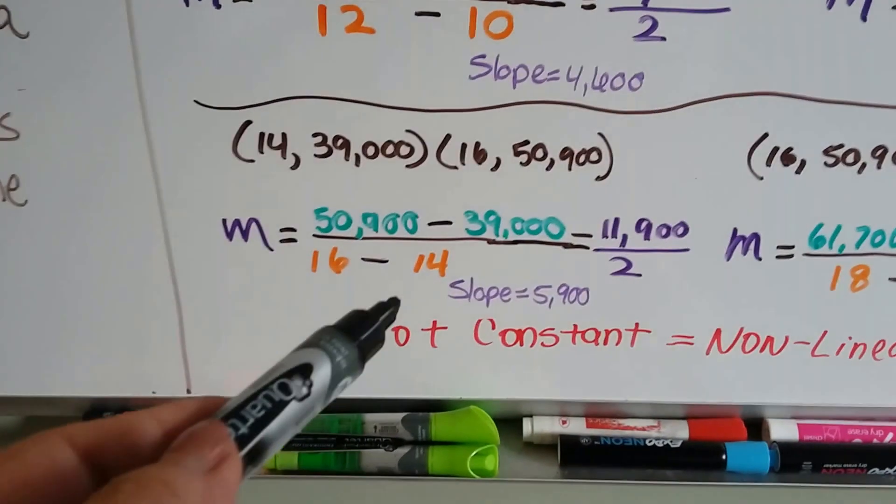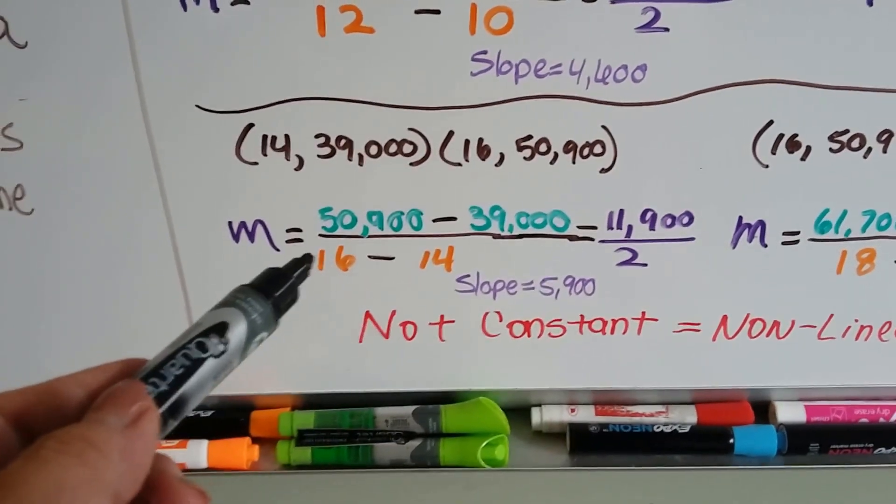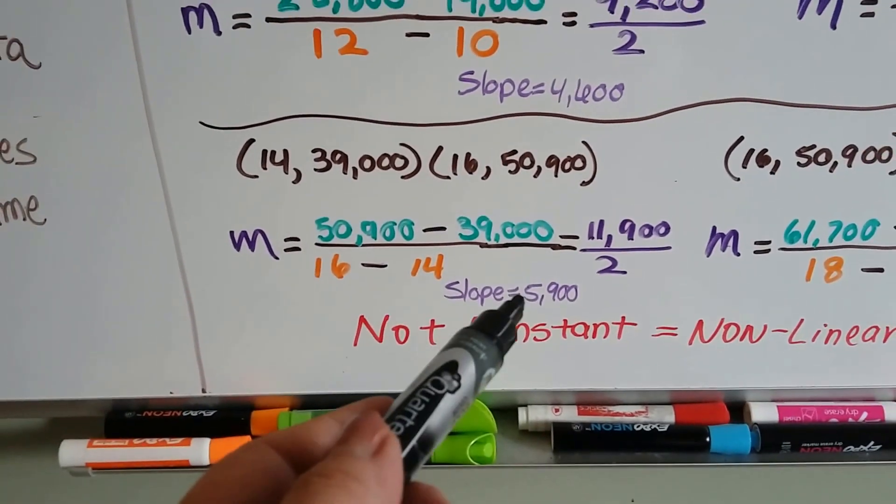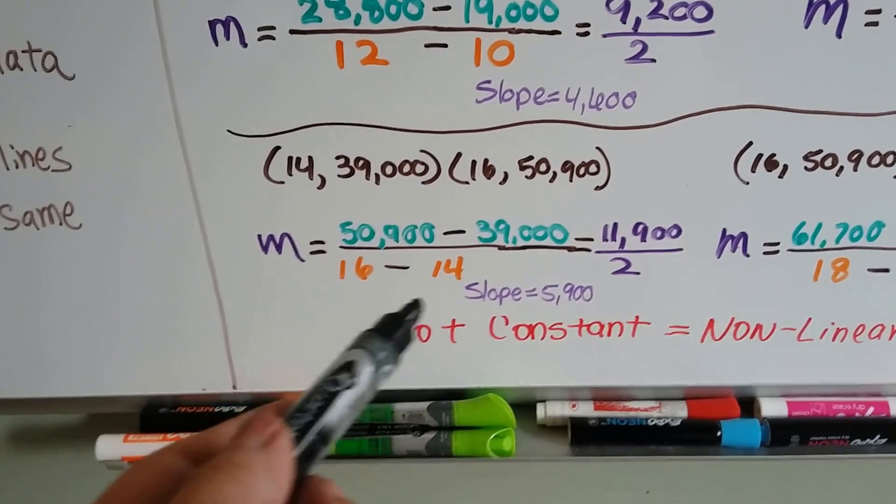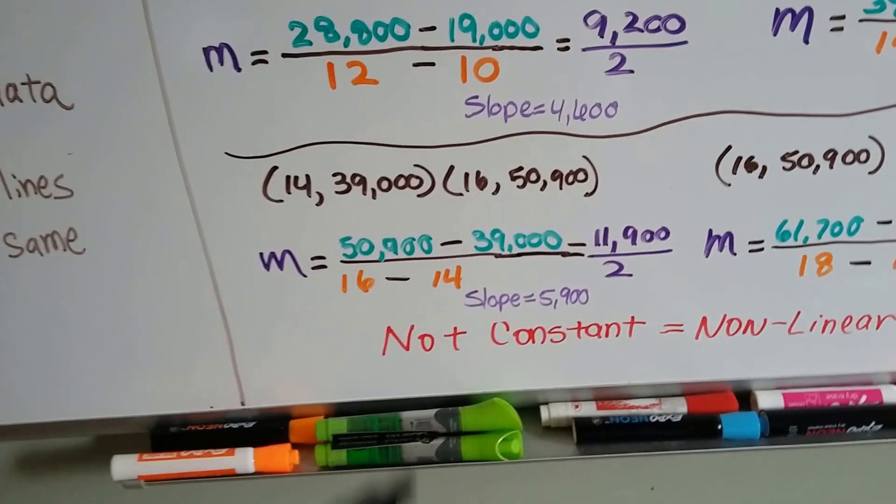To compare between an associate's degree and a four-year bachelor's degree, each year they'll make about $5,900 more than someone with an associate's degree, the person with the bachelor's.